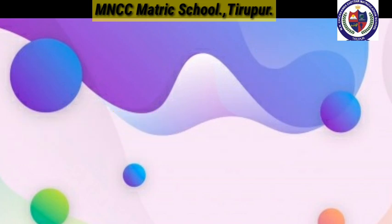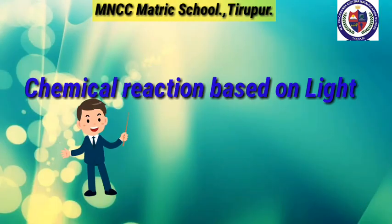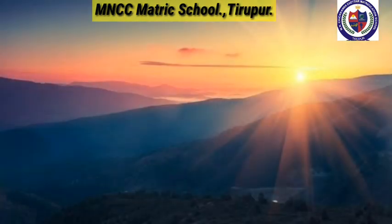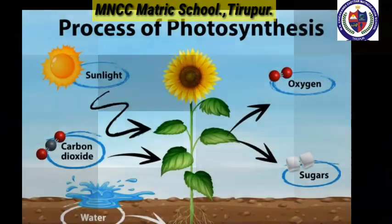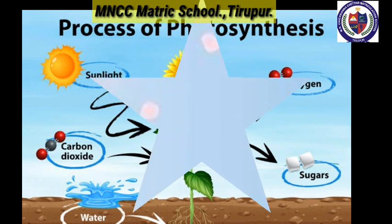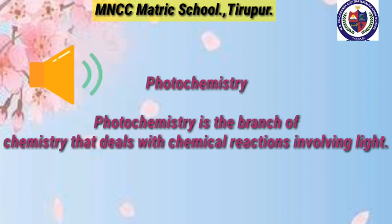Next, chemical reactions based on light. What will happen if there is no sunlight? Sunlight is important not only for us but also for plants. As you know, photosynthesis is a process in which light energy from the sun is used by plants to prepare food in the form of sugars from carbon dioxide and water. These chemical reactions driven by light are called photochemical reactions.